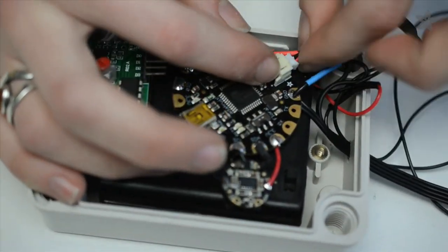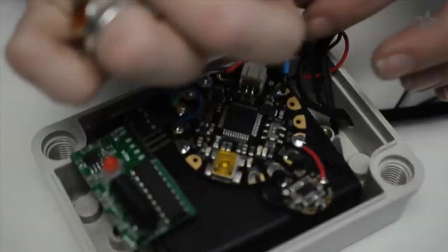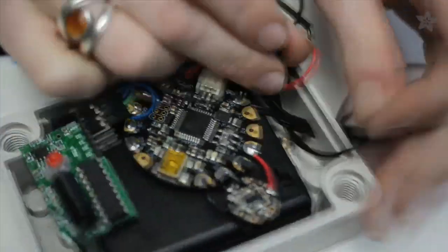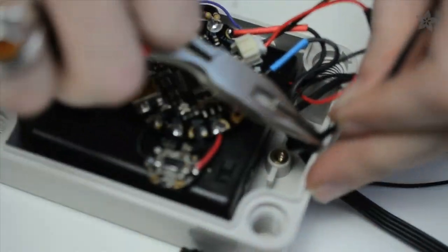Plug in the Flora's power and set any switch on your battery pack to on. We'll be using the external toggle switch to power the circuit. And then use a zip tie for strain relief on any cables exiting the enclosure.